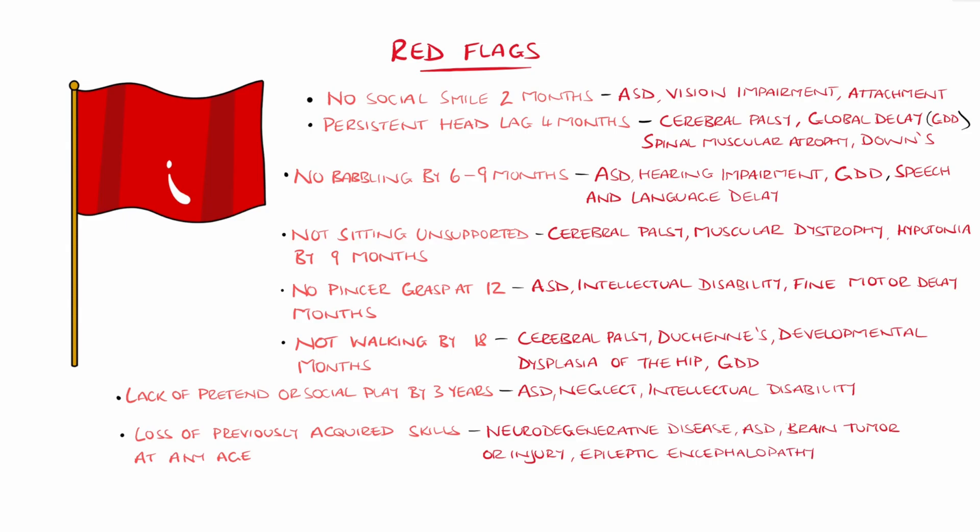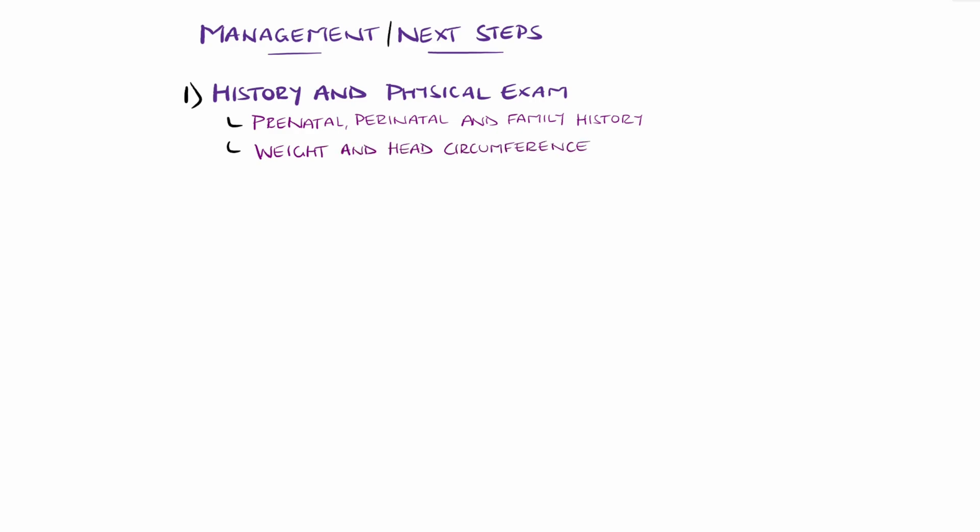Once a delay has been identified, the next steps involve taking a detailed history and physical exam, including prenatal, perinatal, and family history. Physical exam can include looking at growth parameters like weight and head circumference, as well as looking for dysmorphic features such as craniofacial abnormalities, single palmar crease, or skin findings like café au lait spots. There may be signs of more systemic illness such as hepatosplenomegaly suggesting a metabolic disorder, or cardiac murmurs which can result from genetic syndromes.